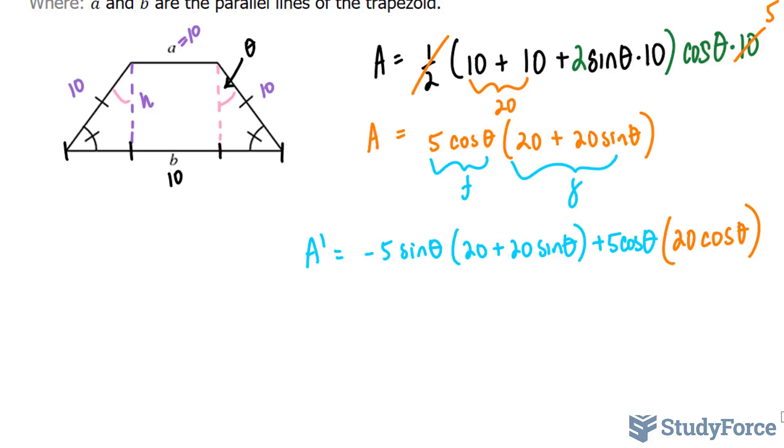Now what I'll do next is simplify this expression as much as I can, and by that I'll multiply this part into the 20 and the 20 sine theta, and that gives me negative 100 sine theta. And then negative 5 sine times 20 gives me negative 100 sine squared theta. And then multiplying these two, I get 100 cosine squared theta.